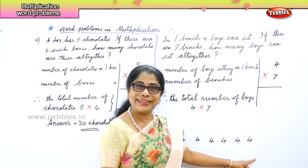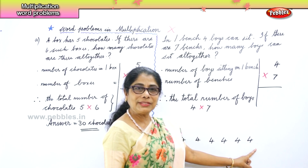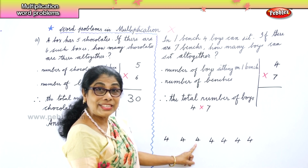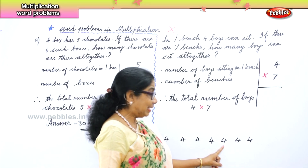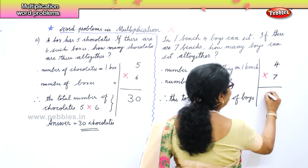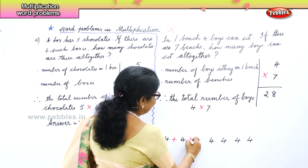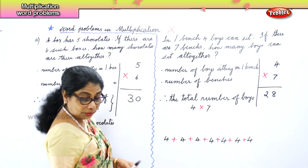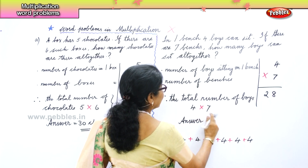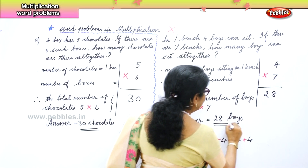Seven fours — that's what you are doing. One bench, four boys, there are seven benches. And didn't we learn that multiplication is repeated addition? Four plus four is eight, eight plus four is twelve, twelve plus four is sixteen, twenty, twenty-four, twenty-eight. Seven fours are twenty-eight. So what is your answer? There are twenty-eight boys. Answer: twenty-eight boys are sitting on seven benches.